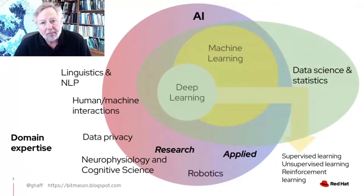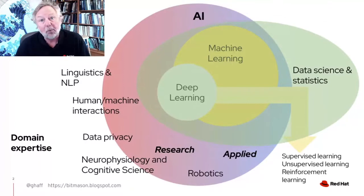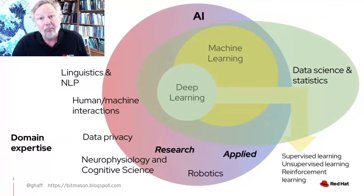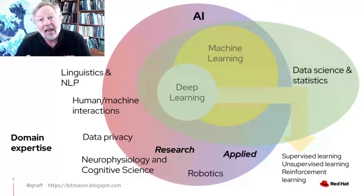Let's start by looking at a landscape of AI. This is a diagram I came up with for when I give talks about learning AI, and I specifically draw a distinction between what I call research AI and applied AI. Applied AI includes things like machine learning, data science and statistics, and certain aspects of deep learning. This doesn't mean there isn't also research going on in pretty much all of those topics, but rather that there are practical applied tools that citizen data scientists can make use of without necessarily getting into the deep theory behind those techniques.